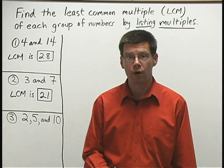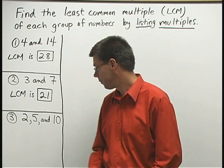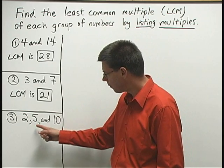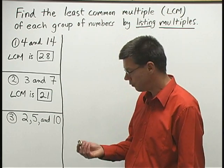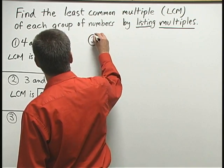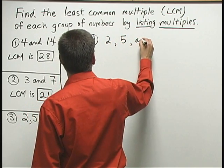Let's take a look at one more problem where we find an LCM by listing multiples. We're going to do number 3 here, where we work with the LCM of three different numbers: 2, 5, and 10.